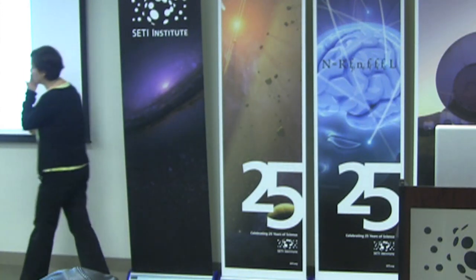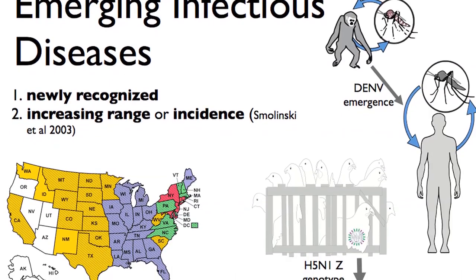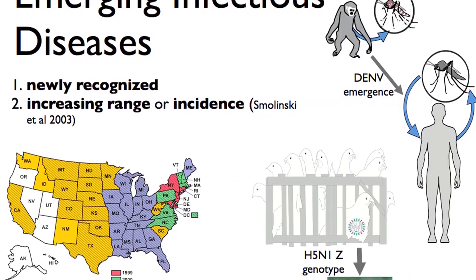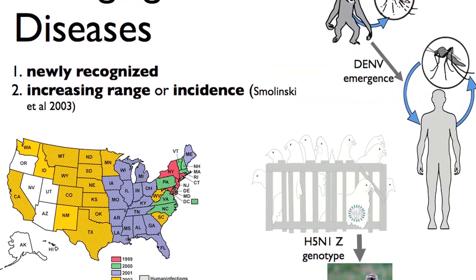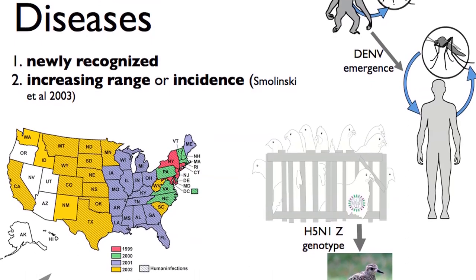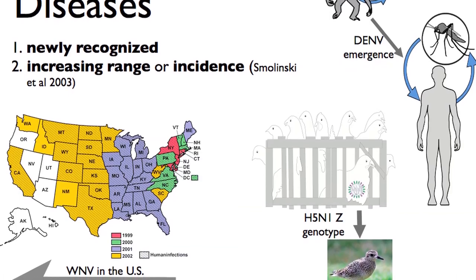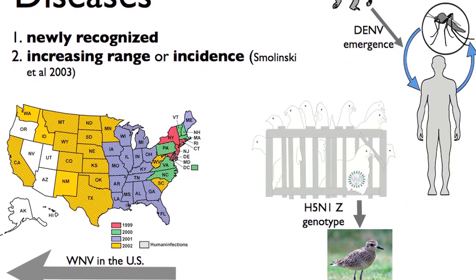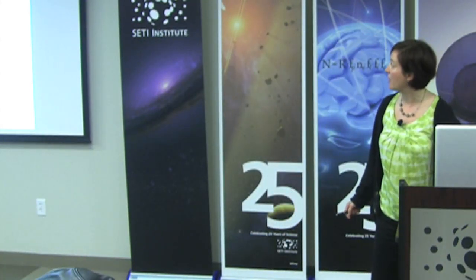An emerging infectious disease is any disease that's newly recognized — a new pathogen — but it can also refer to a pathogen that suddenly changed its distribution in space or host distribution, or increased its incidence. I bring to your attention West Nile virus, which expanded across the United States starting in 2001, spreading across the country by 2002. This is a virus well-known to be endemic in Africa but was not known in the United States until recent years. I also bring to your attention dengue virus.